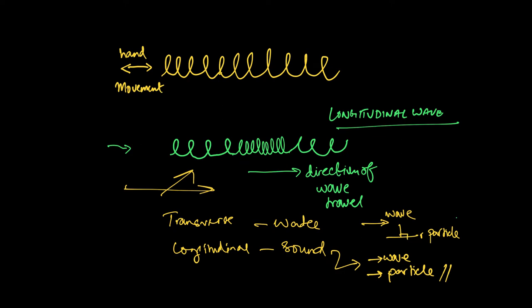One final point about longitudinal waves: when you have particles compressed together, that section is called a compression. The more interesting term is when particles are farther apart from each other than normal — those parts of the wave are called rarefactions. So this is how longitudinal waves work, with alternating compressions and rarefactions.